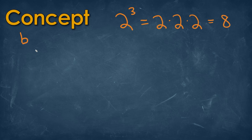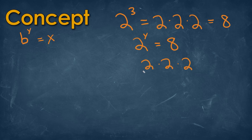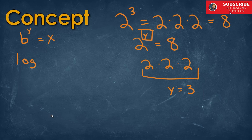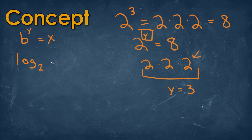We can think of this conceptually using a letter b. If we raise b to the y power, it gives us a value of x. Now if we have the value of 2 raised to the y power equal to 8, we need to figure out how many times we multiply 2 to get 8. We know that would be three times. We use a logarithmic function to denote this — log base 2, where 2 is the base, meaning the number we're multiplying each time. So log of 8 base 2 equals 3, meaning it takes three multiplications of 2 to get a value of 8.